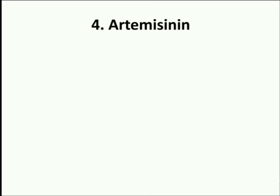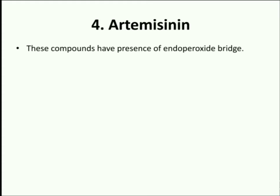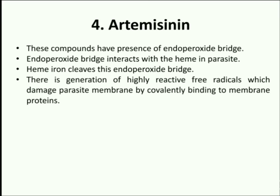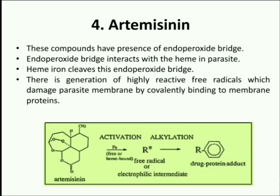The Artemisinin family includes drug candidates such as Artemisinin, Artemether, Artesunate, etc. These drug candidates have the presence of an endoperoxide bridge within their structure. It has been suggested that the endoperoxide bridge interacts with heme in the parasite. Heme iron cleaves the endoperoxide bridge, which results in generation of highly reactive free radicals, which then link to the parasite's membrane by covalently binding to membrane proteins. The resulting free radical intermediate may then kill the parasite by alkylating and poisoning one or more essential malarial proteins.